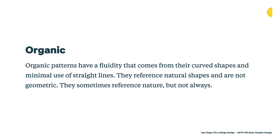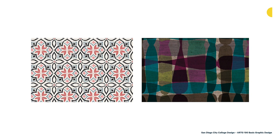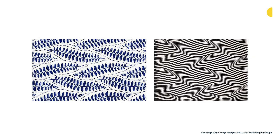We also have organic patterns. Organic patterns have a fluidity that comes from their curved shapes and minimal use of straight lines. They reference natural shapes and are not geometric — they sometimes reference nature, but not always. On the left we have a floral-like pattern created with curved lines. On the right, a very abstract organic pattern of blob-like shapes with different transparencies. Here are some that reference things in nature more directly — a stem of leaves, and an optical illusion pattern that references water with lines that taper and move to create a wave-like effect.